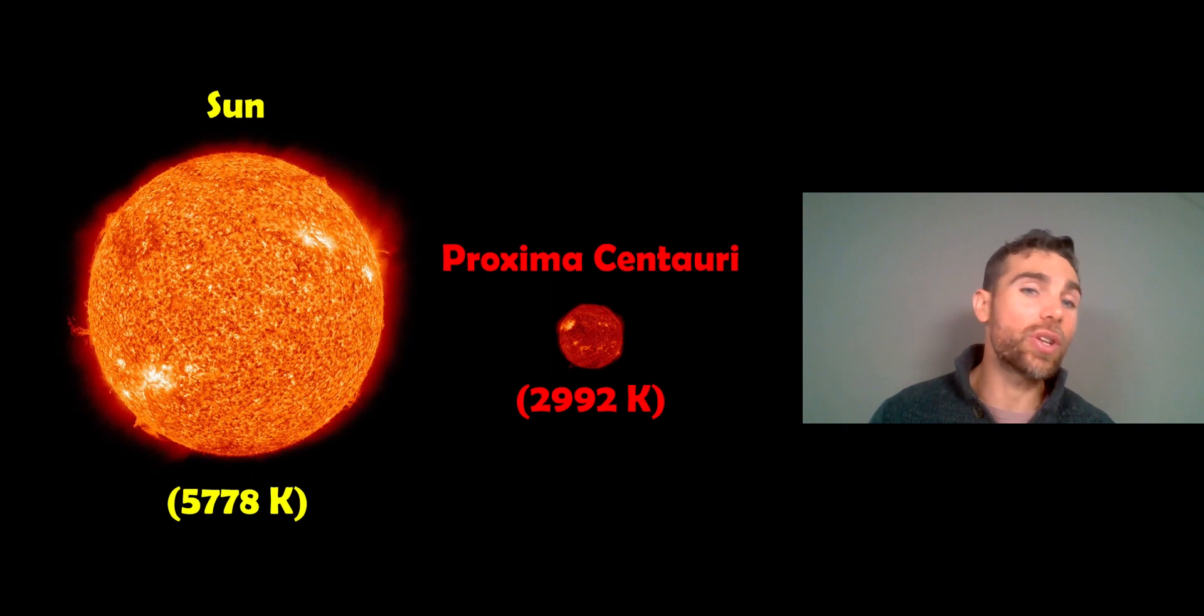So the Sun is almost 6,000 Kelvin surface temperature, whereas Proxima Centauri is just under 3,000. So it's almost half the surface temperature which gives it a cooler colour basically, so that's why it's a reddish colour as opposed to what the Sun might be or another star, so that's why it's a red dwarf because it's small and it's red.